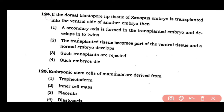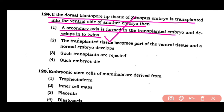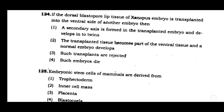Question number 124: If the dorsal blastopore lip tissue of a Xenopus embryo is transplanted into the ventral side of another embryo, then a secondary axis is formed in the transplanted embryo and it develops into a twin. The correct answer is option 1.